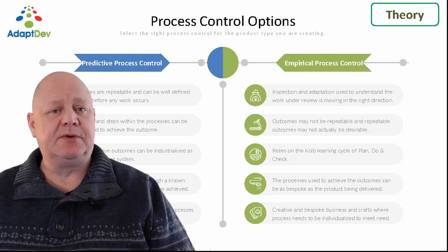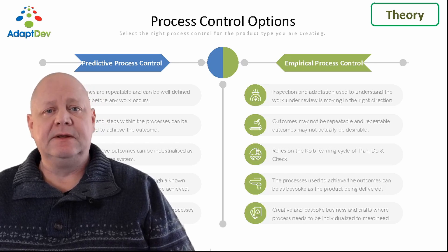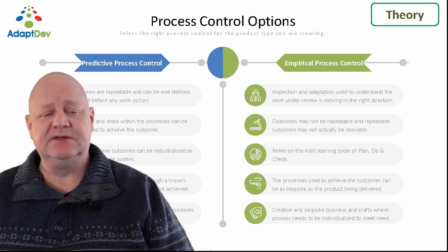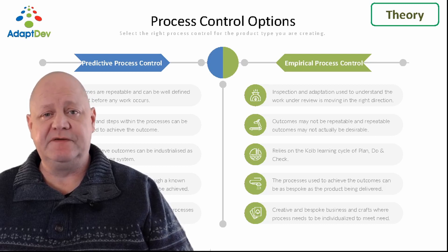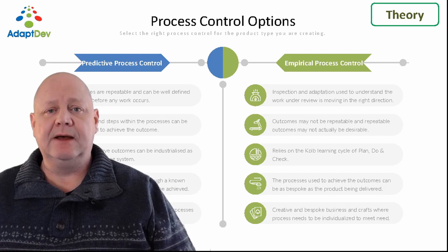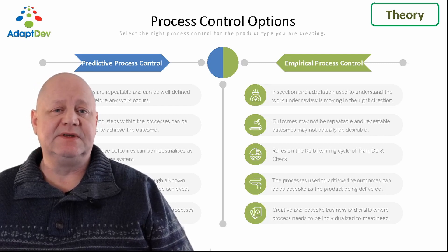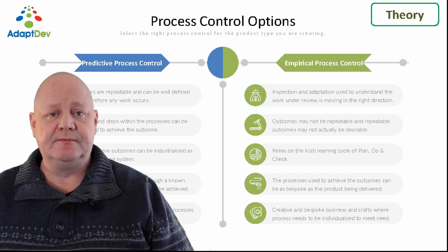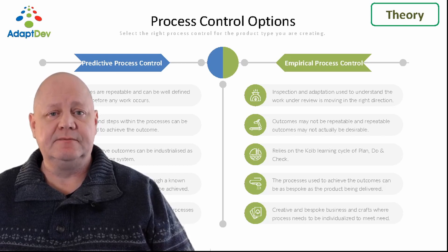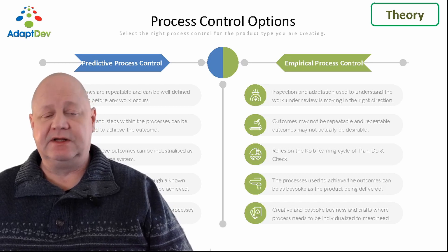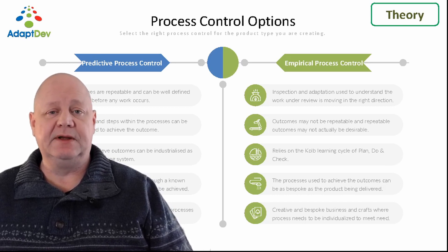In empirical process control, work is not so well defined. Inspection and adaptation is used to understand that the work under review is moving in the right direction. Outcomes may not be repeatable, and repeatable outcomes may not actually be desirable. This relies on the co-learning cycle of plan, do, check. The processes being used to deliver the outcomes can be as bespoke as the product being delivered.